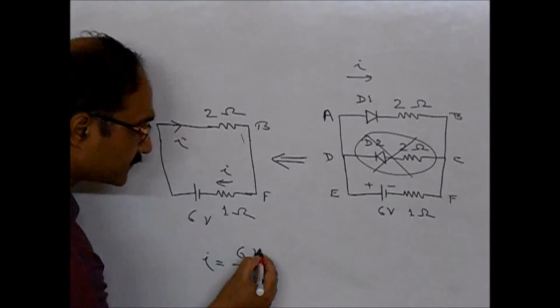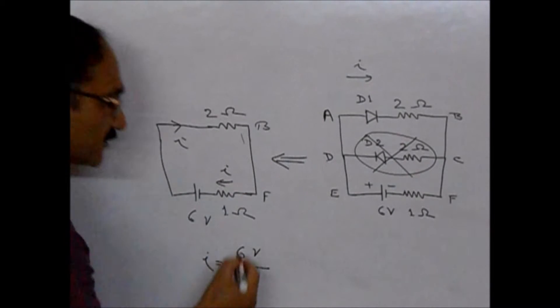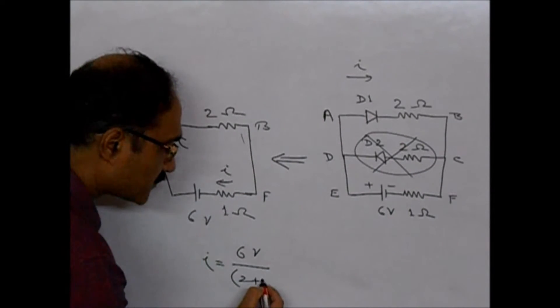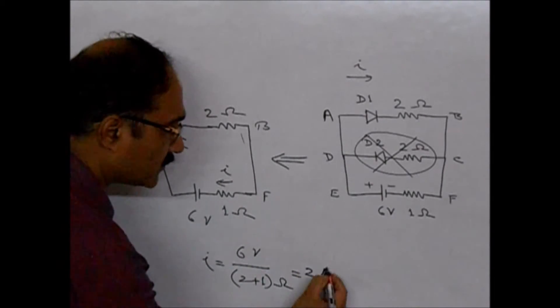From this circuit we see that the current will be total EMF in the circuit, which is 6-volt divided by total resistance, which is 2-ohm plus 1-ohm. So 2 plus 1-ohm, 6 by 3 is 2-ampere.